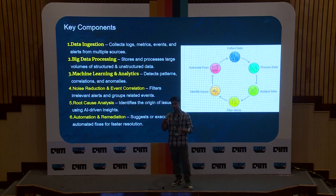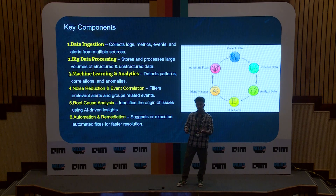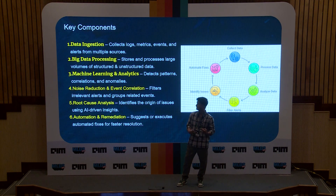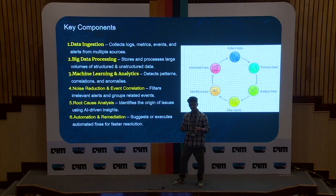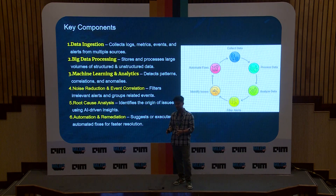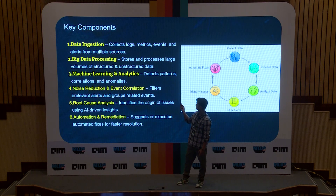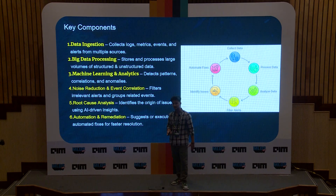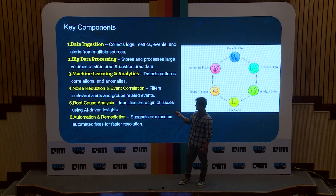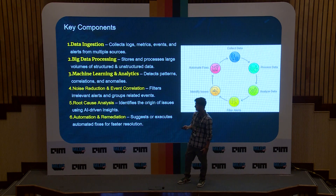These are some key components — the pillars of AIOps. It starts with data ingestion: you have different servers, databases, and systems pushing data. You get a lot of logs, metrics, and traces — important information stored in a particular storage like an S3 bucket. You collect that data, store it in a large volume of structured or unstructured data, then run machine learning and analytics on it to understand common issues. After that, you focus only on the important alerts that are beneficial for the company.